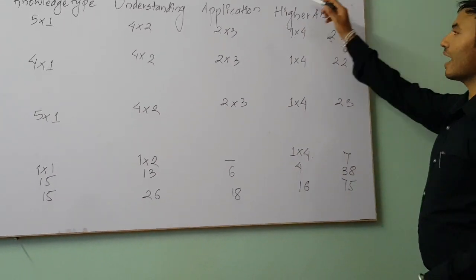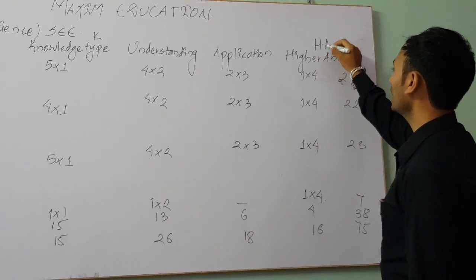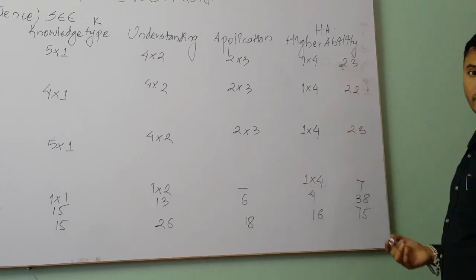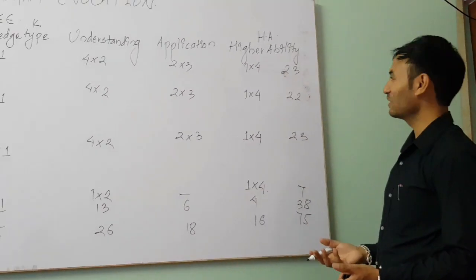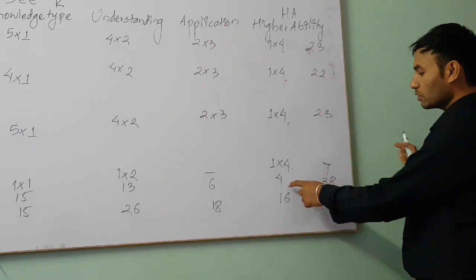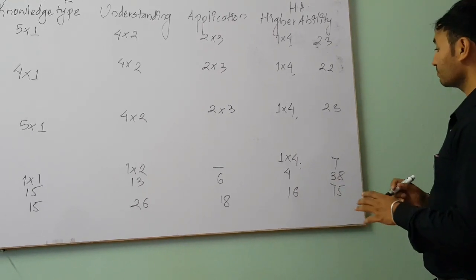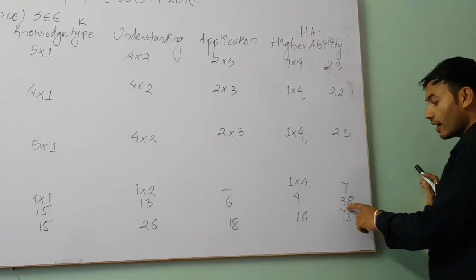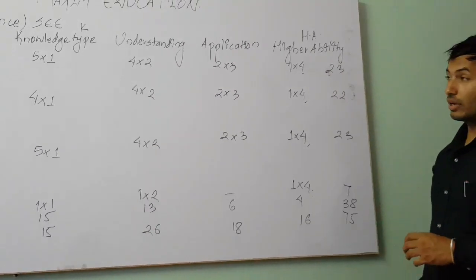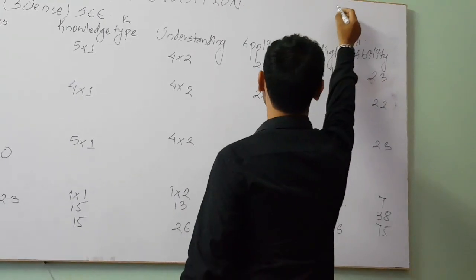The last type is higher ability questions, found in physics, chemistry, biology, and geology and astronomy. These are sometimes called 'wrong questions' and each carries 4 marks. Altogether there are 4 such higher ability questions.